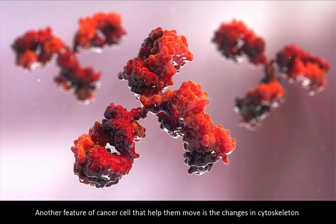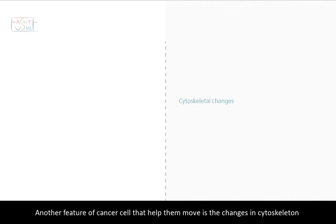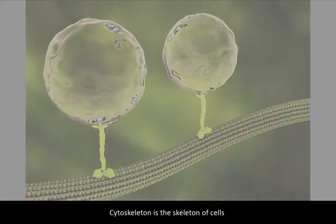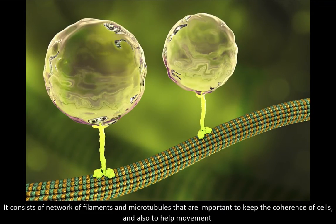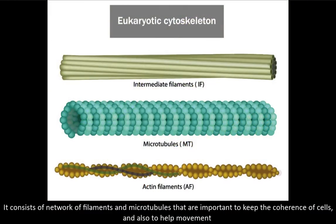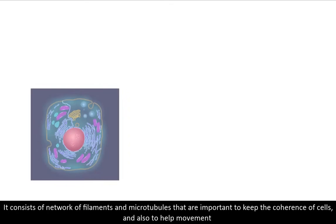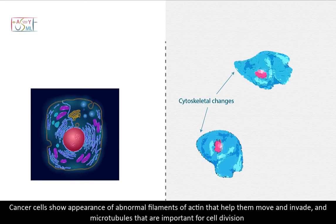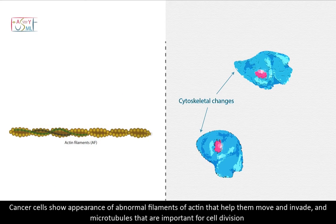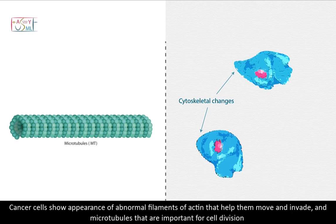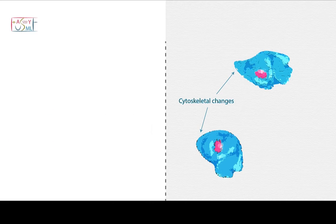Another feature of cancer cells that helps them move is changes in the cytoskeleton. The cytoskeleton is the skeleton of cells, consisting of a network of filaments and microtubules that are important to maintain cell coherence and aid movement. Cancer cells show the appearance of abnormal filaments of actin that help them move and invade, as well as abnormal microtubules that are important for cell division.